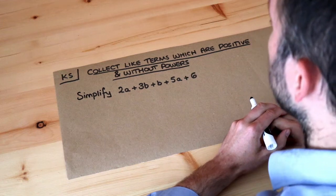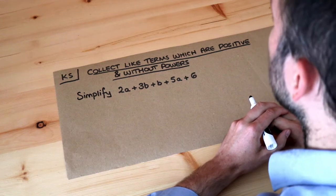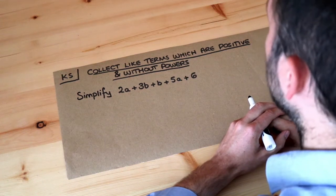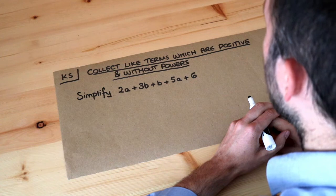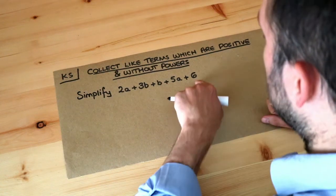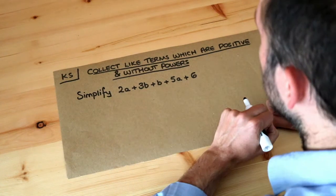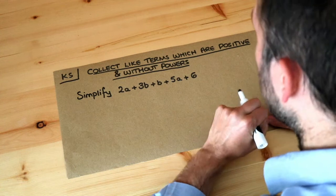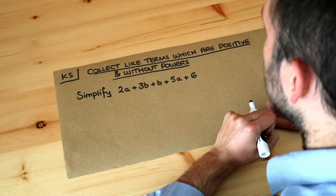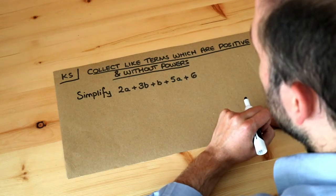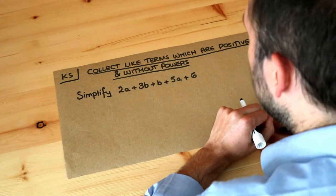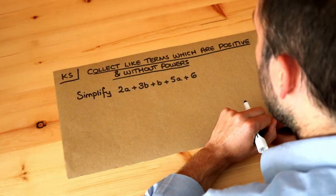Hello and welcome to Dr. Roster-Math's key skill video on collecting like terms which are positive and without powers. Often in algebra we want to simplify expressions, and to simplify expressions just means to make them tidier — so it involves less stuff, making it easier to read and easier to deal with.